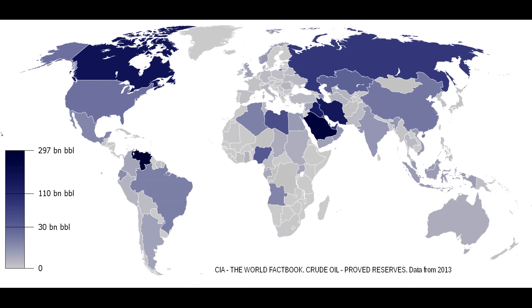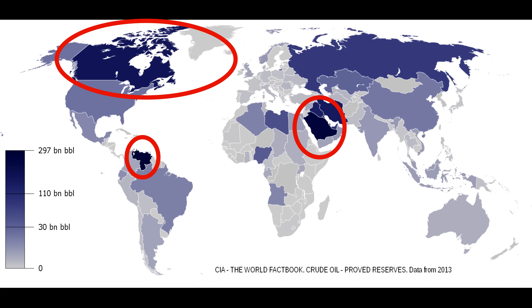Let's take a look at where these oil reserves are held. This data is from 2013 and comes from the World Factbook. The darker the color of the country, the more oil reserves there are, up to a maximum of 297 billion barrels of proven reserves. Places like Saudi Arabia, Venezuela, and Canada have the most proven reserves. There's plenty more oil in other countries like Russia, the United States, and parts of Africa as well, but that's where it is concentrated. A lot of this is unconventional, but there's plenty of oil to go around for now.